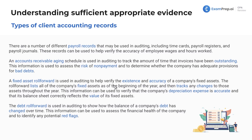A fixed asset roll forward is used to verify the existence and accuracy of the company's fixed assets. It lists all fixed assets at the beginning of the year and tracks any additions, disbursements, or disposals, along with depreciation throughout the periods. This verifies that depreciation expense is accurate and the balance sheet correctly reflects the value of fixed assets. The debt roll forward shows how the balance of a company's debt has changed, including original balances, borrowings, interest payments, and accrued interest, and is used to assess financial health and identify any red flags.